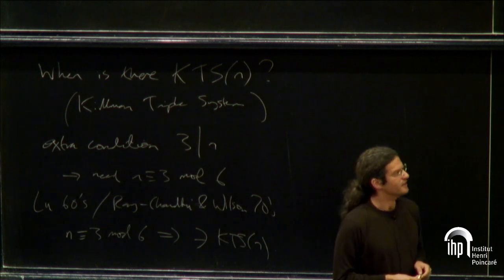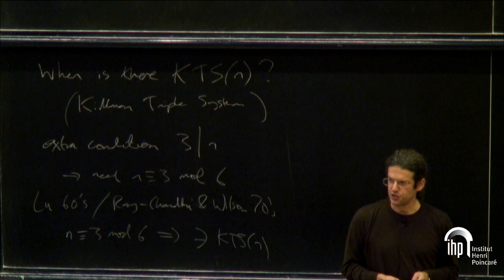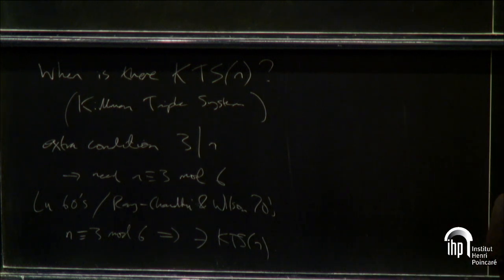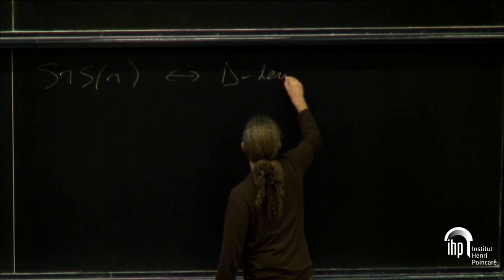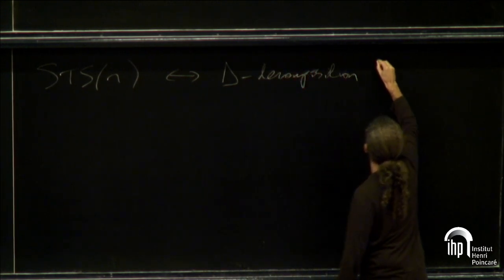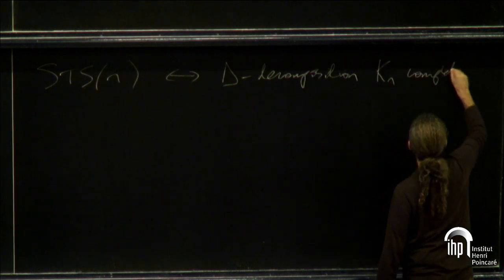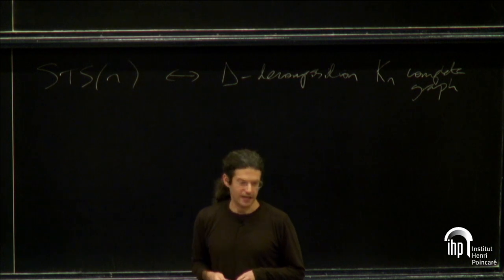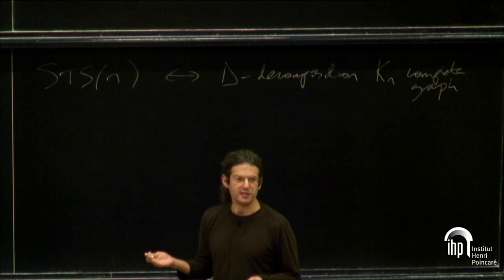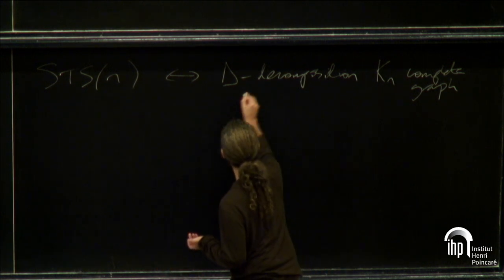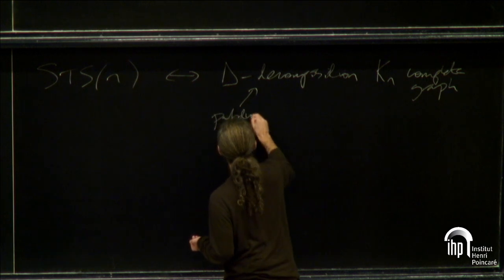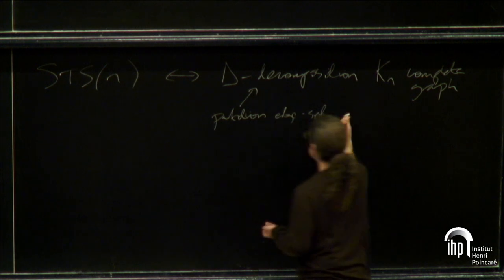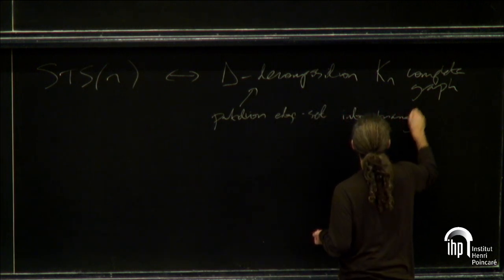Let me discuss various ways to generalize this. I can think of a Steiner triple system as a triangle decomposition of a complete graph. Whenever you have a triple, you think of the triangle represented by the edges of that graph. The condition that every pair is in exactly one triple translates directly to every edge being in exactly one triangle — a partition of the edge set into triangles.